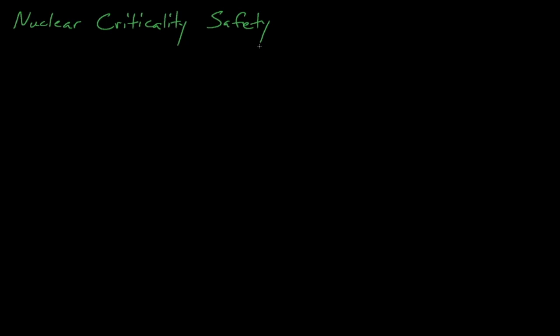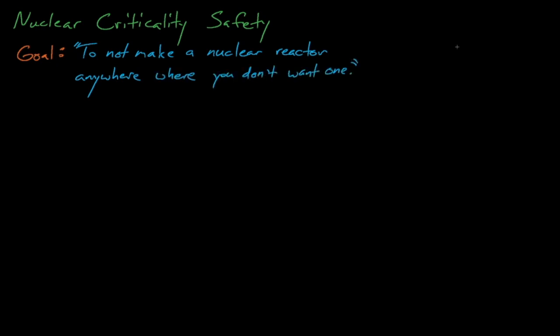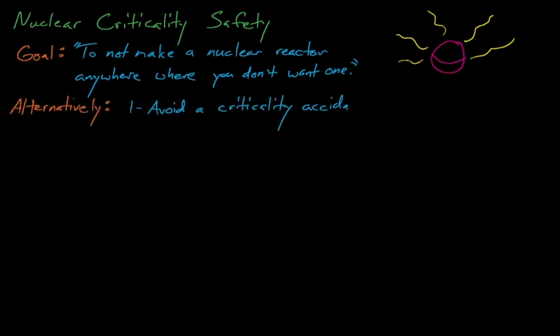So what is the goal of nuclear criticality safety? Simply put, our goal is to ensure that we don't make a nuclear reactor anywhere where we don't want to have one. A perhaps more articulate definition is to first, avoid any criticality accidents, and second, to protect personnel from the consequences of any criticality accidents or events.